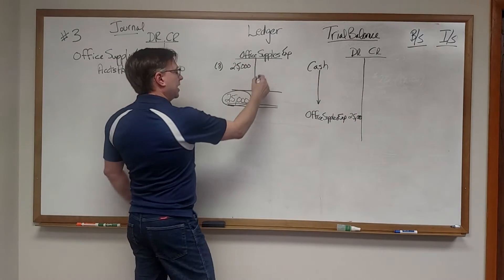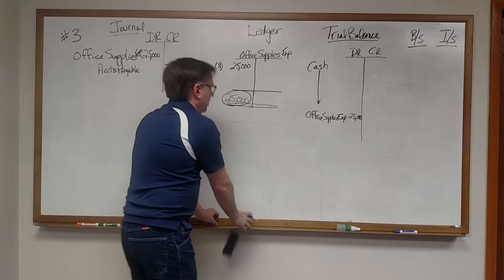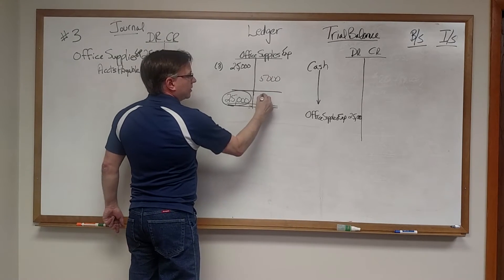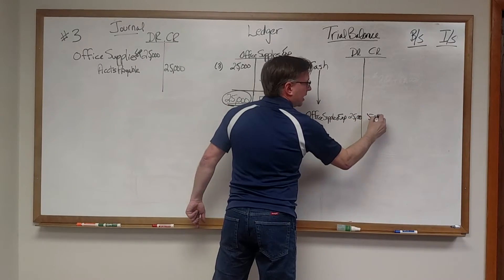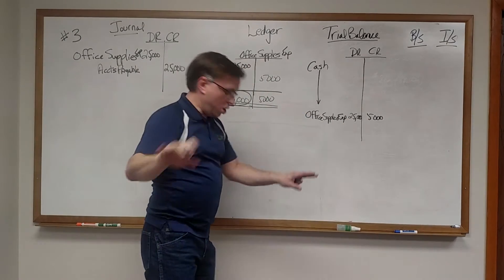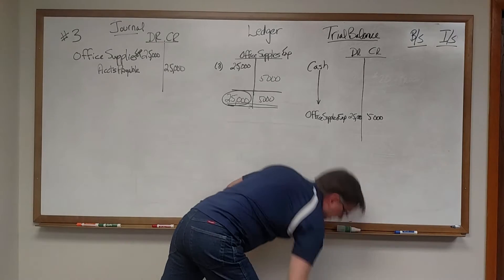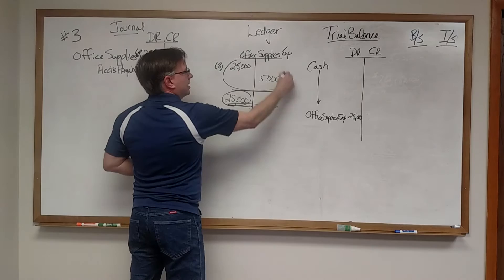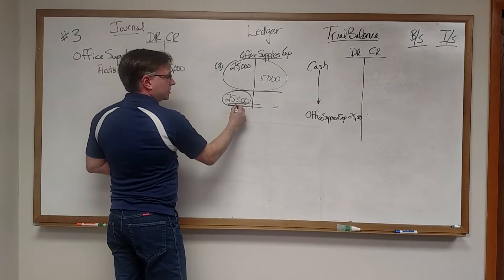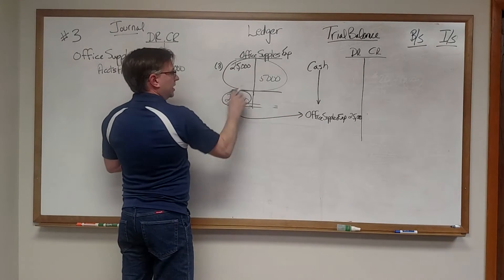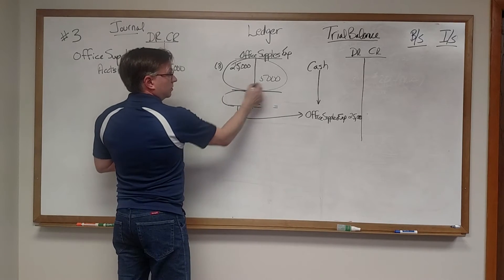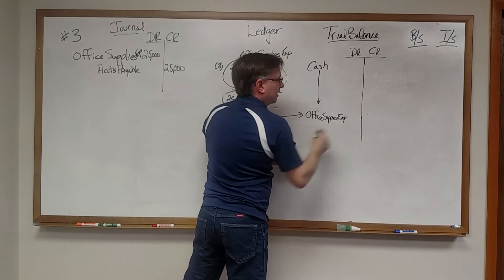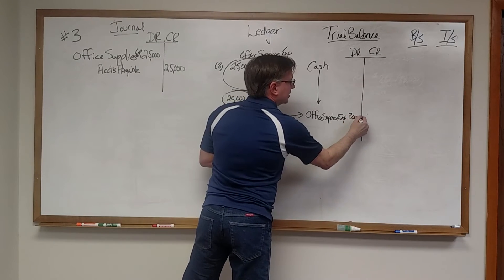Some people make the mistake of if we had $5,000 over here, they would have put $5,000 here and bring $5,000 here. No, no, no. It's a balance, which means we only take the net of those transactions and bring it over here. So in the scenario where it was the $5,000 going out or $20,000, we would have brought $20,000 over as the debit.